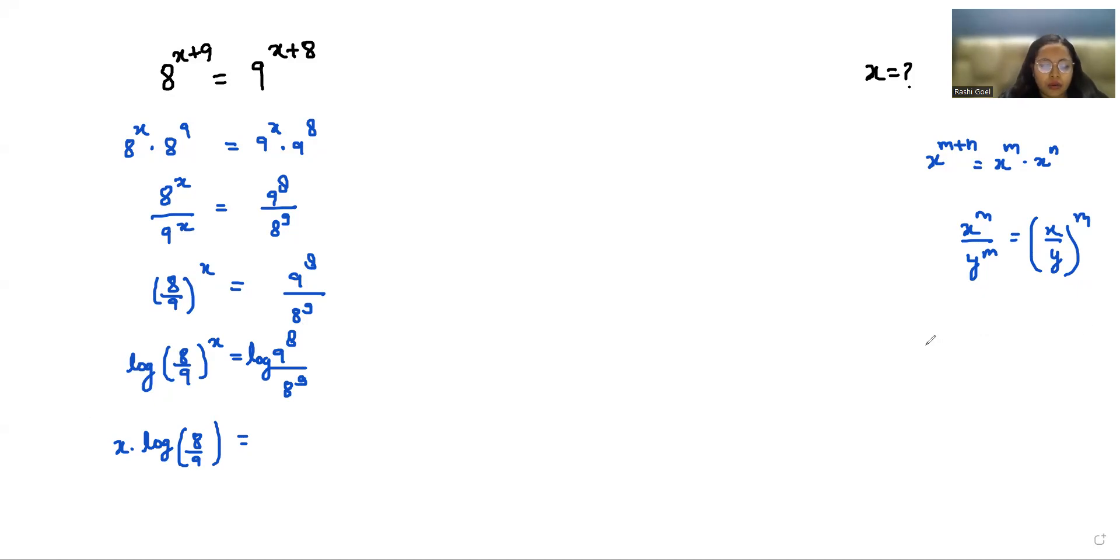Taking log on both sides, using the log rule: log a by b equals log a minus log b. So log 9 power 8 minus log 8 power 9 on the right side.